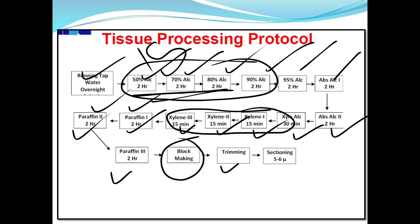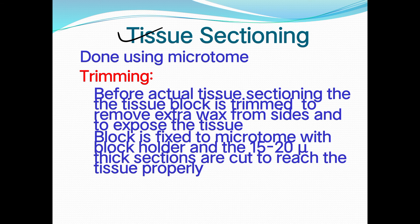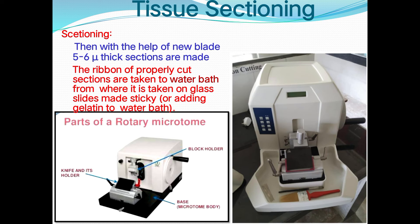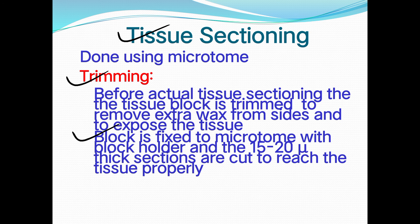Sectioning is done using a microtome at 5 to 6 microns thickness. Before actual sectioning, the tissue block is trimmed to remove extra wax using a blade so it fits easily in the microtome. The wax covering the slide is removed to expose the tissue, the block is fixed to the microtome with a block holder, and 15 to 20 micron thick sections are first cut to reach the tissue properly.